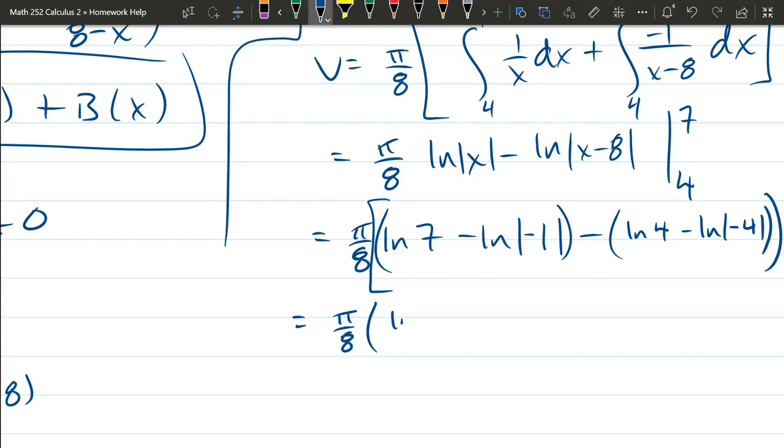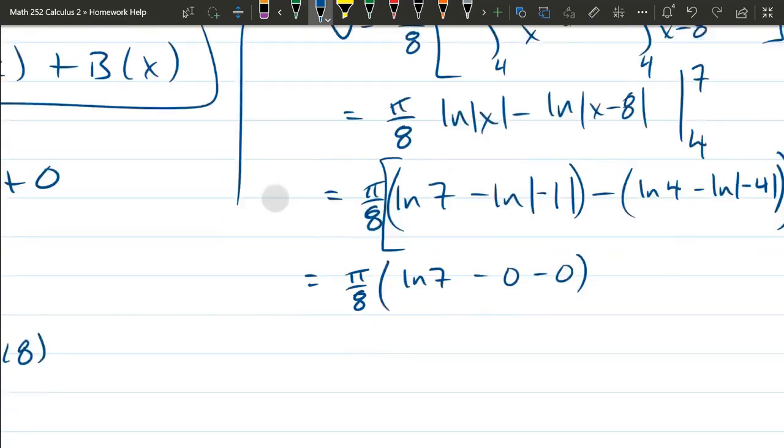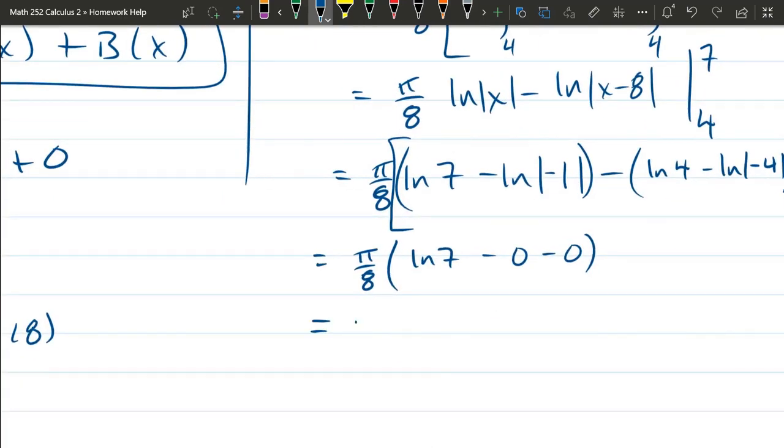ln 7 minus ln. This is ln of 1. ln of 1 is 0. So, that's disappearing. If you look at the second one over here, they're both ln 4. So, they're going to cancel. This one's ln 4 minus ln of absolute value of 4, which is ln 4. So, I'll just write minus 0 minus 0. So, it's just pi over 8 times ln of 7.